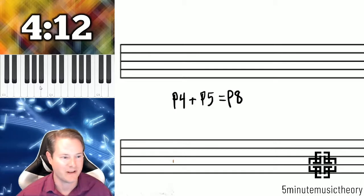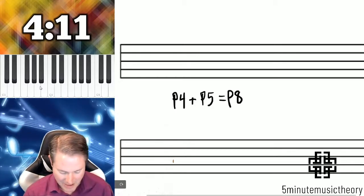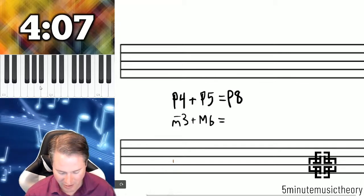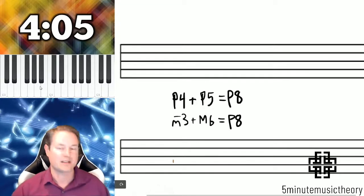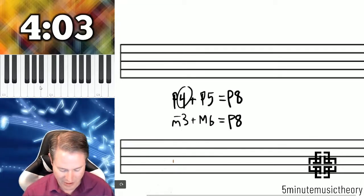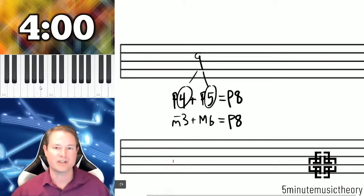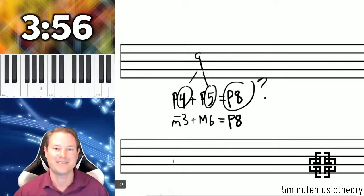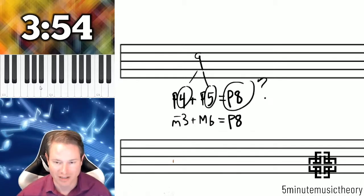For example, a perfect fourth and a perfect fifth are complementary intervals. A minor third and a major sixth are complementary intervals. Something you might notice that's a little bit strange is that when we do the math here, the two numbers actually equal nine, but then they somehow equal a perfect octave as well.